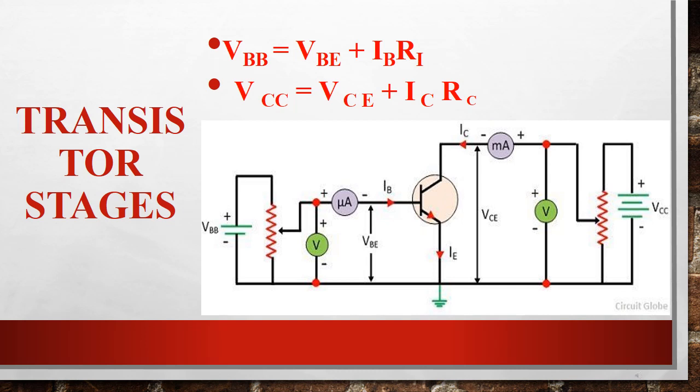The voltage given by VBB is distributed into two parts as given by the diagram. One is current into resistance, that is IB into RB, then voltage VBE. So we add both these terms and we get the total value of VBB, that is the input voltage. This is the equation of forward biasing.